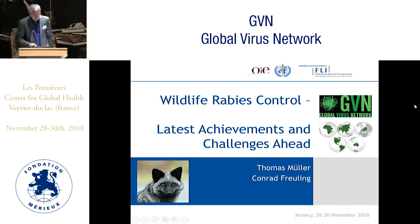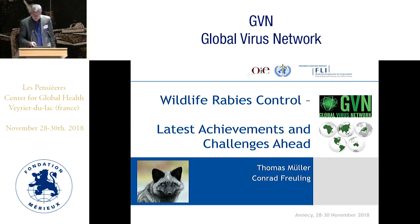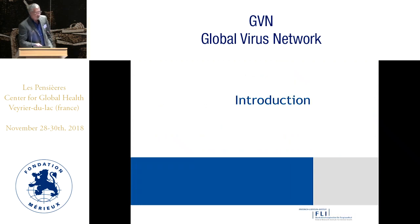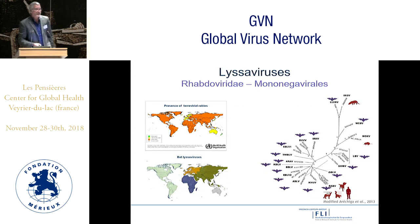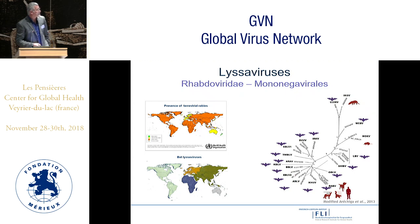This talk will focus on rabies control, covering latest achievements and challenges ahead. Rabies is caused by negative-sense RNA viruses in the genus Lyssavirus in the Rhabdoviridae family. There are 16 recognized and two putative Lyssavirus species known today, with the classical rabies virus as the prototype Lyssavirus species in the genus.